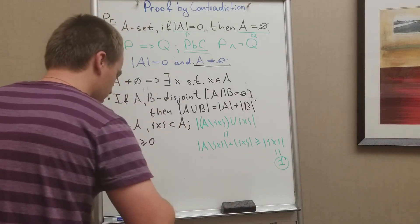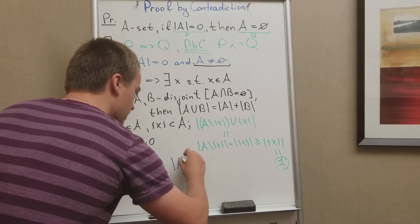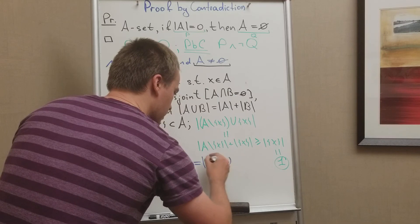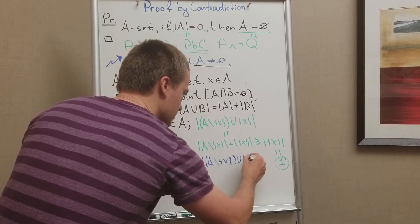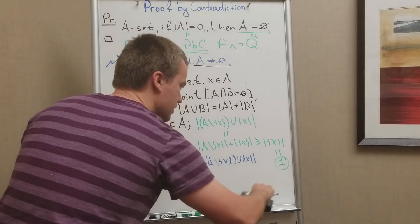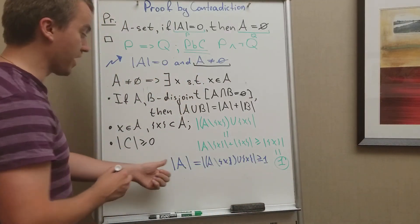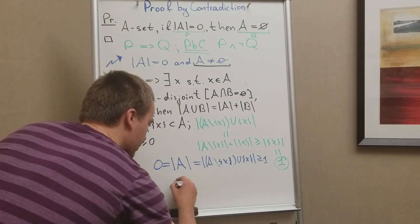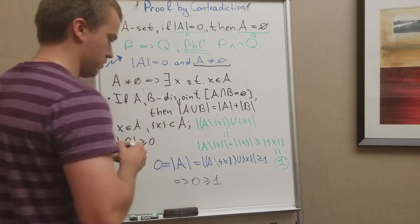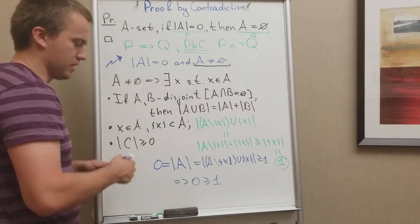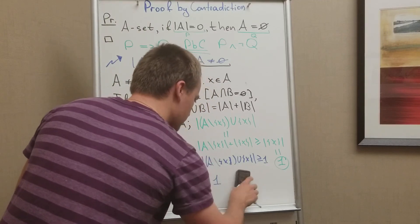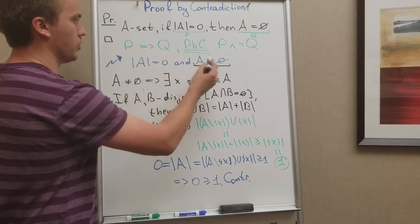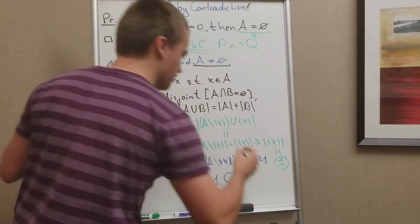So we get that the cardinality of (A minus {x}) union {x} = cardinality of A is greater than or equal to one. But from the other side, the cardinality of A equals zero. This gives us zero is greater than or equal to one — which is a contradiction, since zero is never greater than one. Therefore our original assumption was false, which means A must be the empty set, and we are done.